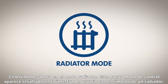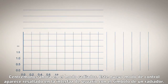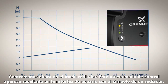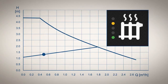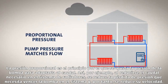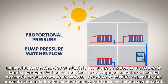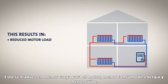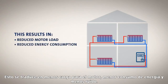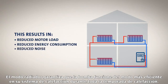Now, let's turn our attention to the radiator mode. This control mode is highlighted with a radiator symbol on the user interface. When in radiator mode, the α1L operates at a proportional pressure — the principle of adjusting the pump's pressure to match the flow. When the required flow in the radiator system is reduced, the pressure loss the pump needs to overcome is also reduced, and therefore the pump reduces its speed, resulting in reduced energy consumption and reduced noise. Radiator mode ensures the most efficient pump operation of your heating system throughout the heating season.